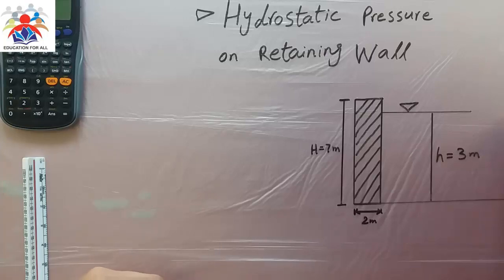The pressure exerted by a fluid at equilibrium at a given point within the fluid by gravitational force is called hydrostatic pressure. It means a pressure which comes from the liquid on the wall.